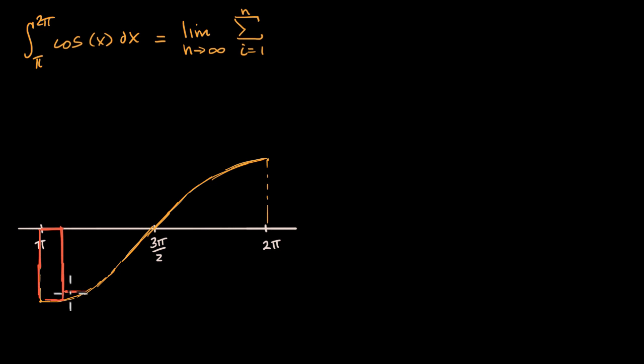Then this might be our second one. And let's do a right Riemann sum, where the right boundary of our rectangle, what the value of the function is at that point, that's what defines the height. So that's our second one, all the way until this one right over here is going to be our nth one.